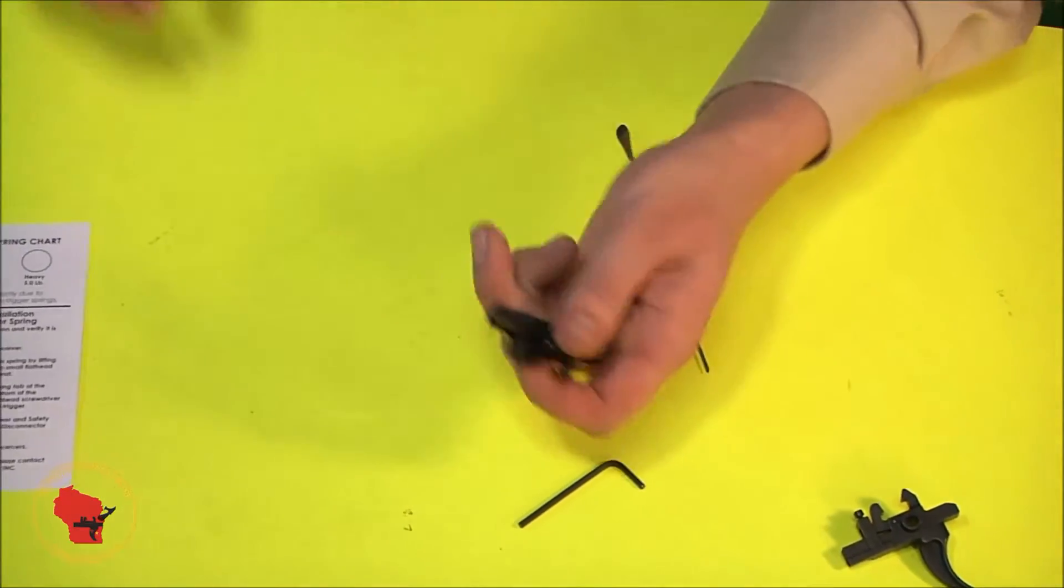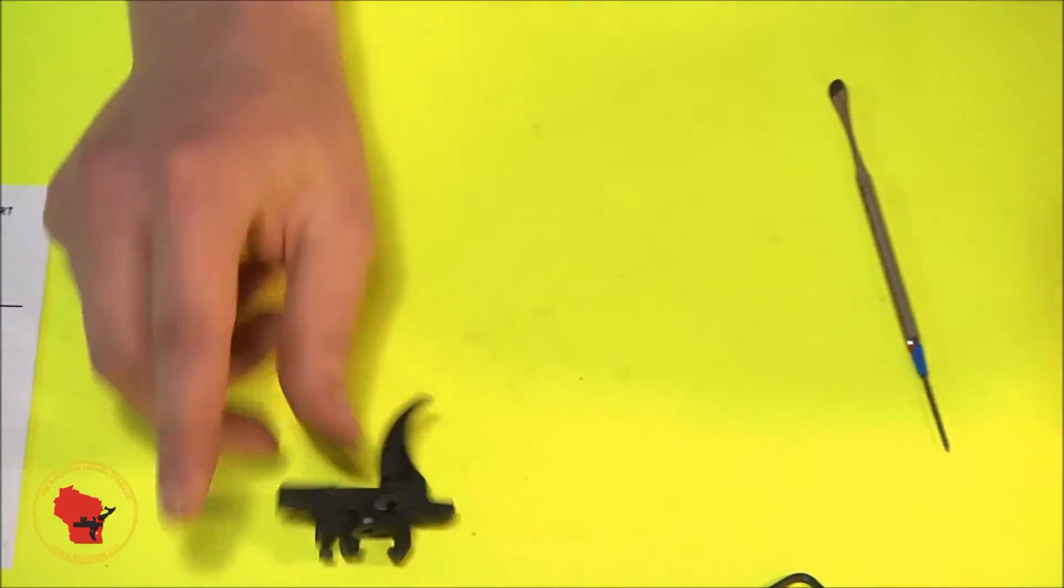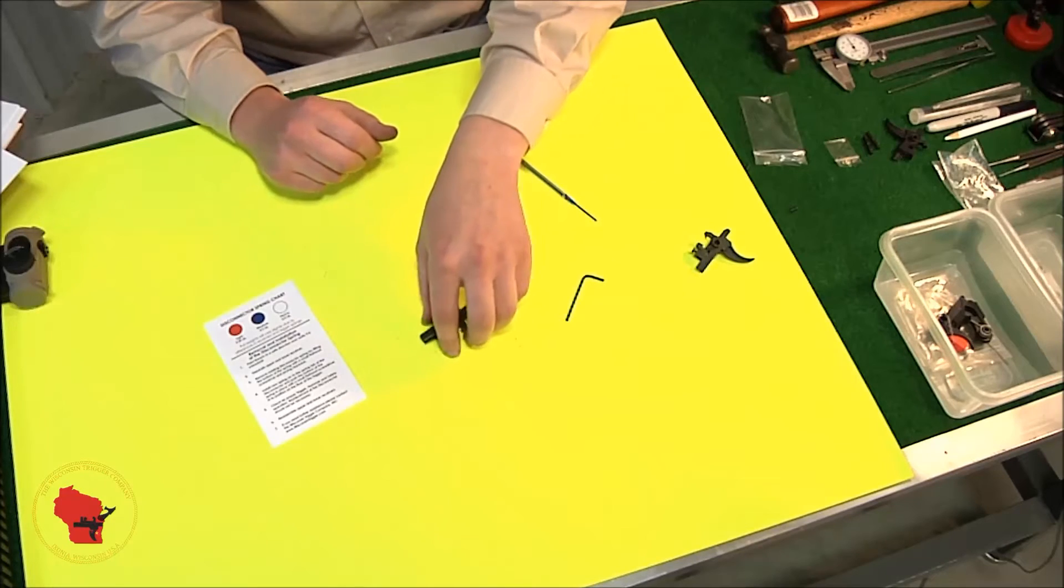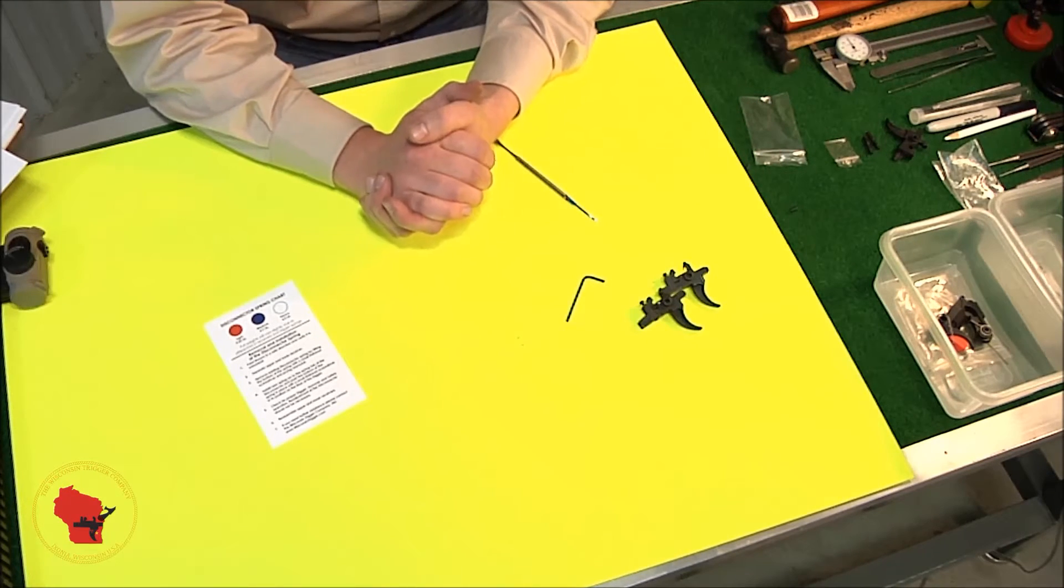If you don't thread it in enough, the plug will interfere with the bottom of the receiver, and the trigger might not move freely. So screw it in flush, no more, no less. And that's all there is to changing the disconnector springs.